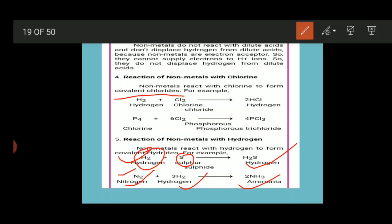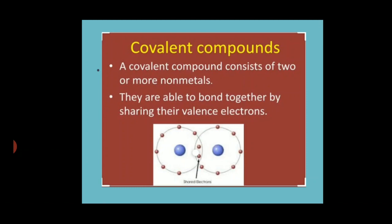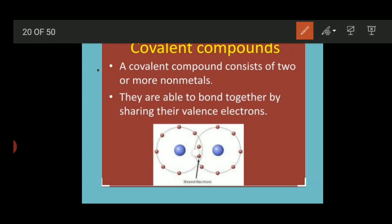Another chemical property of non-metals is that whenever two non-metals combine, they always form a covalent compound. Covalent compounds are formed by the sharing of electrons. Covalent compounds consist of two or more non-metals bonded together by the sharing of valence electrons. This is the main property of covalent compounds — they are always formed by sharing of electrons instead of transferring of electrons, as is the case with ionic compounds.